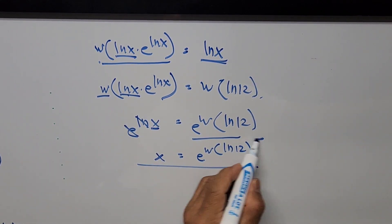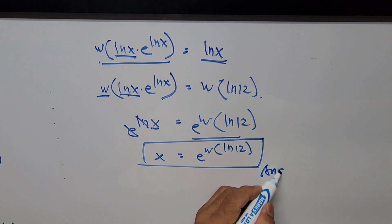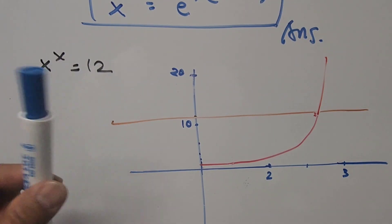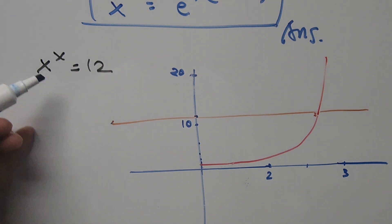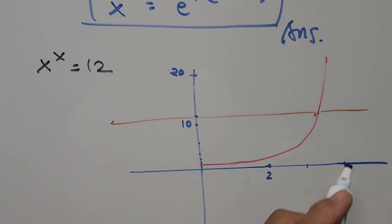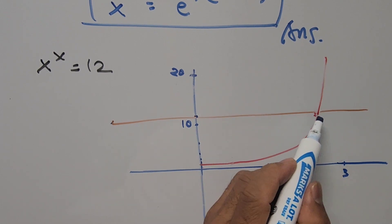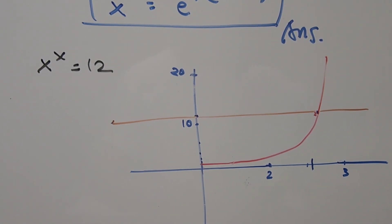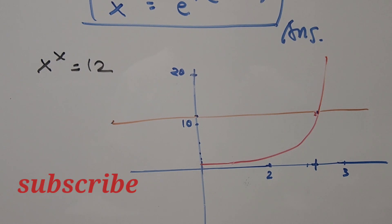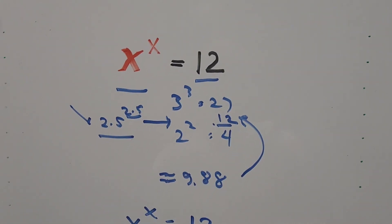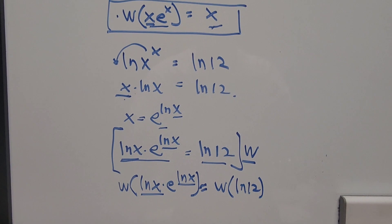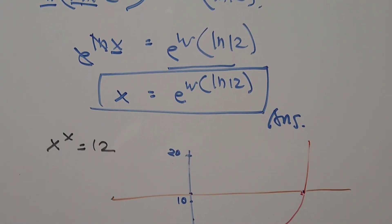So x = e^(W(ln 12)) is our final answer. If we graph the equation, the curve x^x intersects the horizontal line at y = 12 somewhere just past 2.5, around 2.6. Thanks for watching — if you found this video informative please give it a thumbs up, share it, subscribe to the channel, and hit the notification bell. See you in the next video!